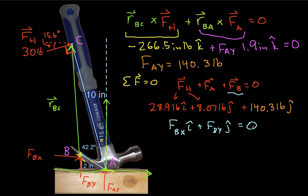So now we will collect the terms that are associated with i-hat. And we get 28.9 pounds plus FBX is equal to 0, which implies then that FBX is minus 28.9 pounds.